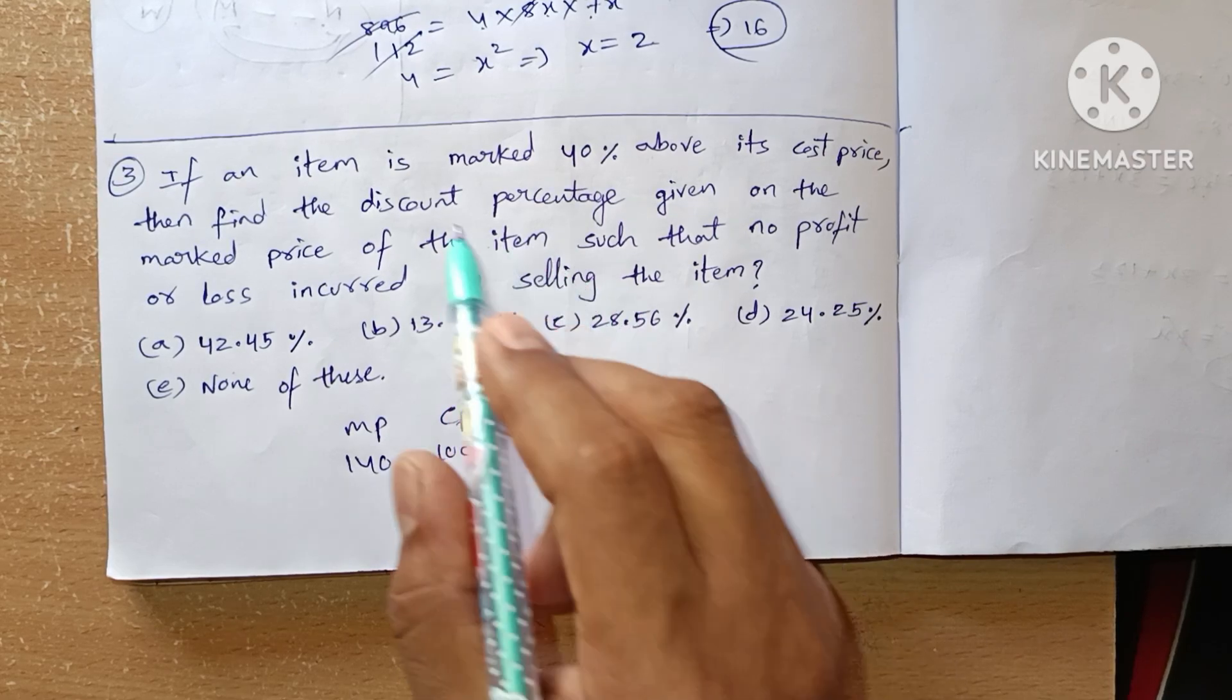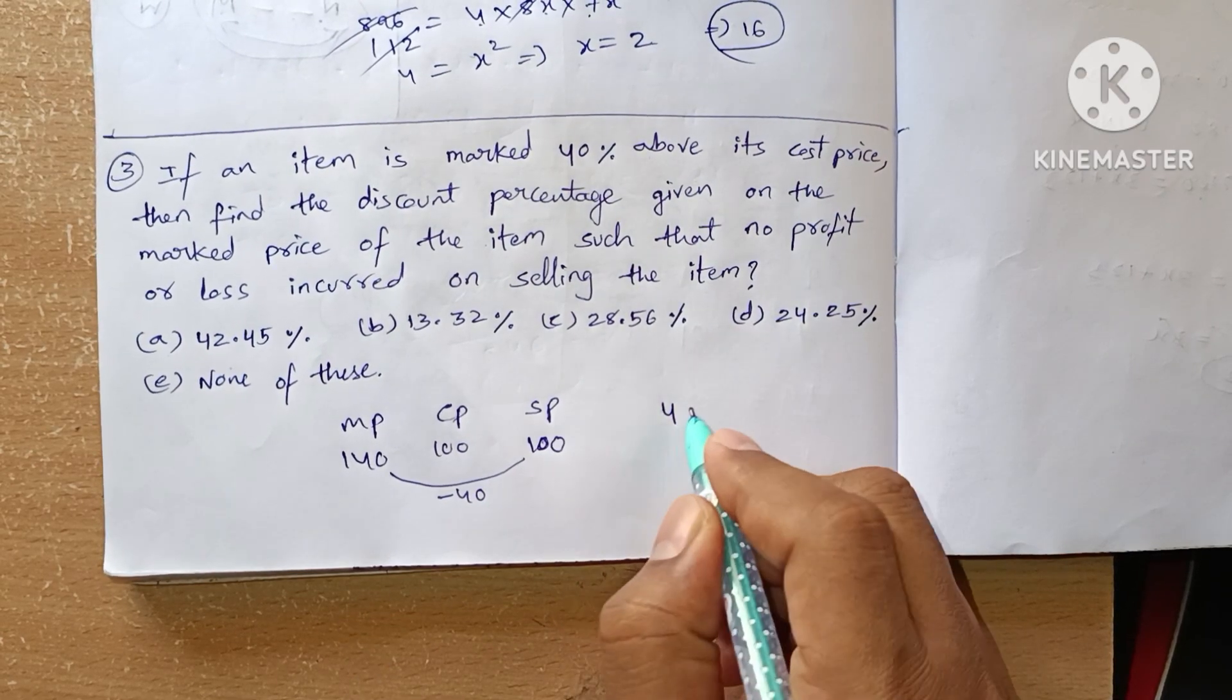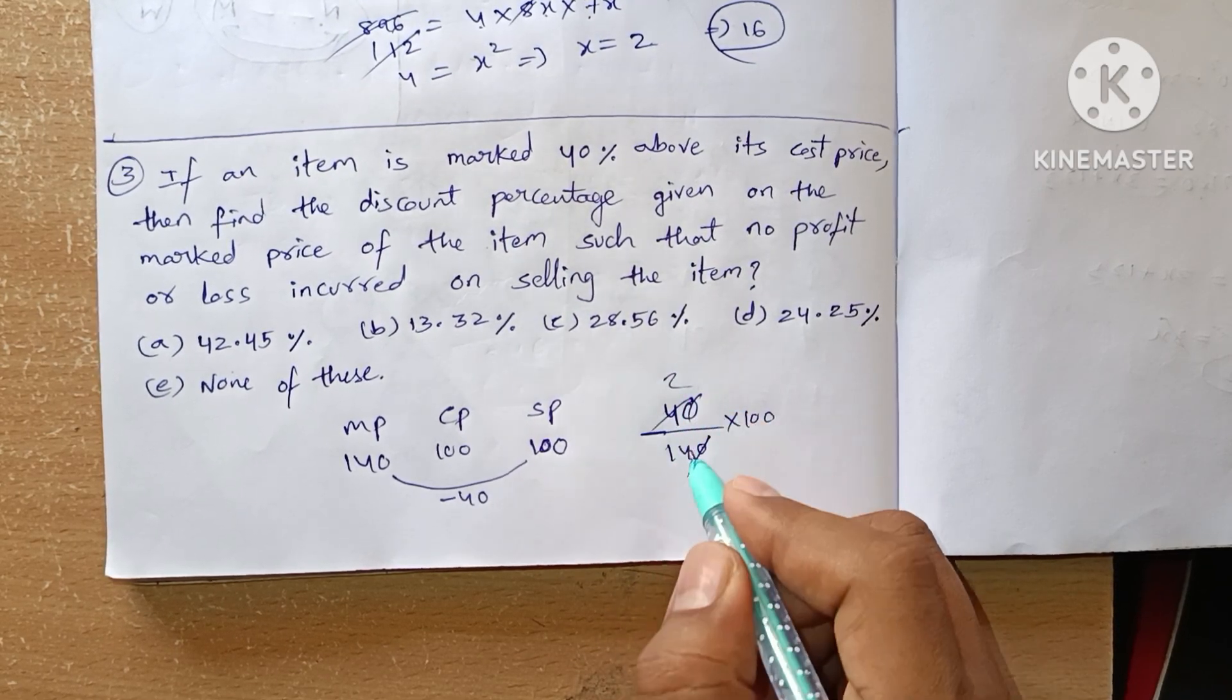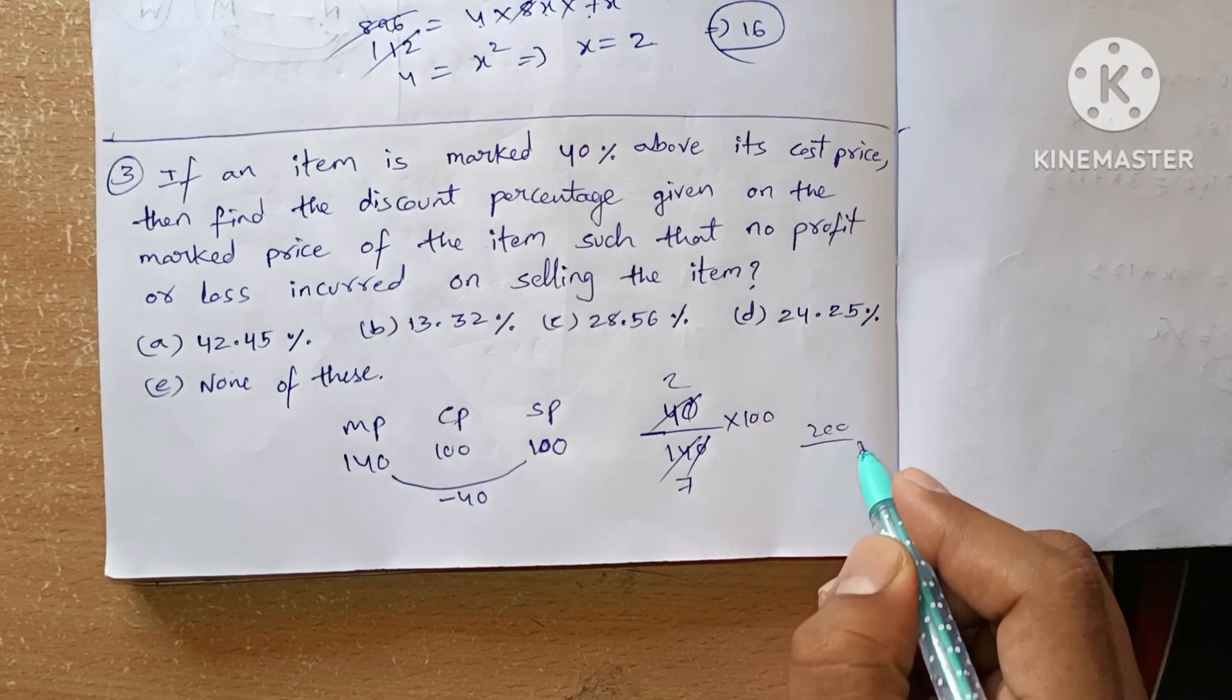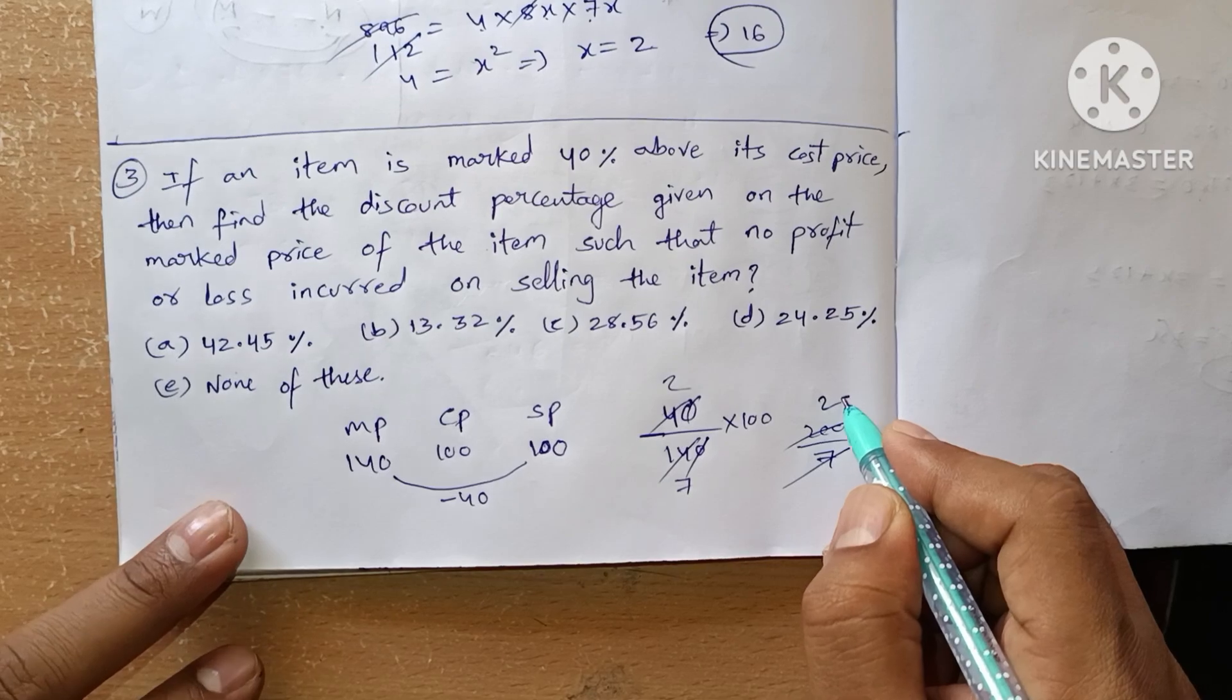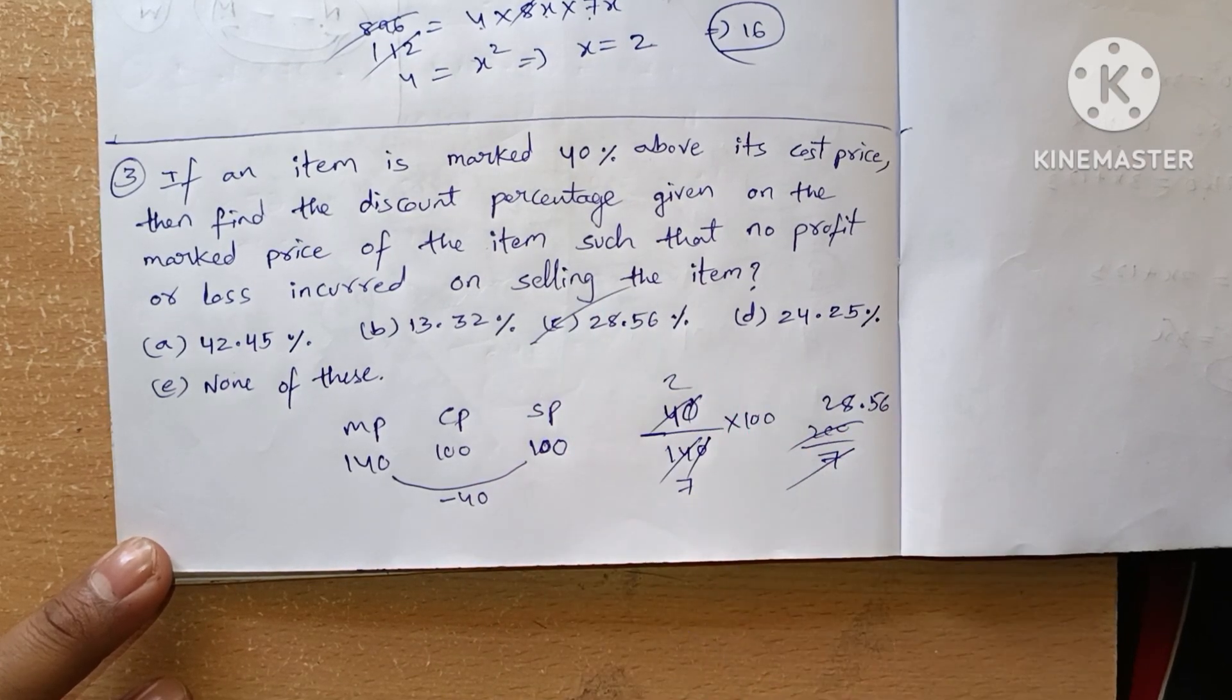He sold it at 100. What is the discount? He gave 40 rupees discount. So discount percentage means discount divided by market price × 100, which is 40/140 × 100 = 2/7 × 100. 200 divided by 7: 7 × 28 is 196, with 4 remaining, giving us 28.57. So our answer is 28.57 percent.